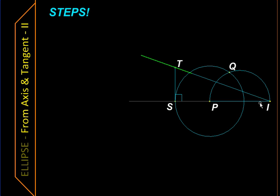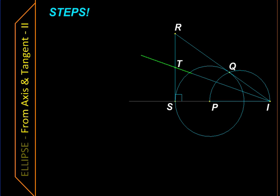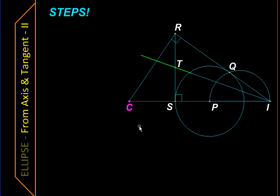We draw the tangent IQ and extend it further until it meets the extension of the perpendicular. Both are extended so that they meet at point R. Then from point R, we draw a perpendicular to this extension of the tangent, and let that perpendicular meet our axis at point C.